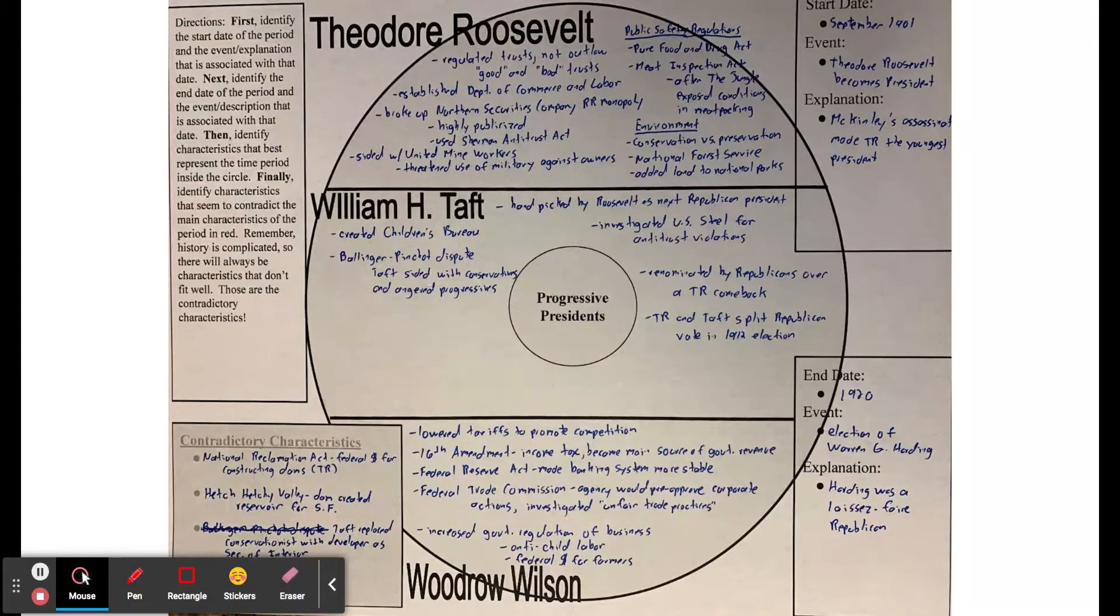This has to do with National Parkland. Pinchot was the head of the National Forest Service, who was more of a preservationist. Ballinger was the secretary of the interior. Ballinger was giving land to companies to use those resources, and Taft ended up siding with Ballinger. That angered a lot of progressives.